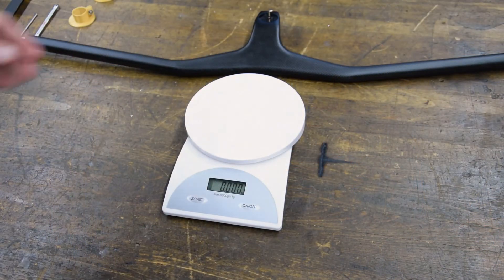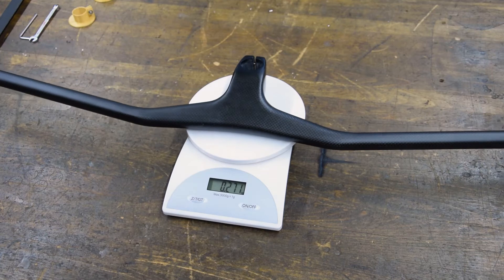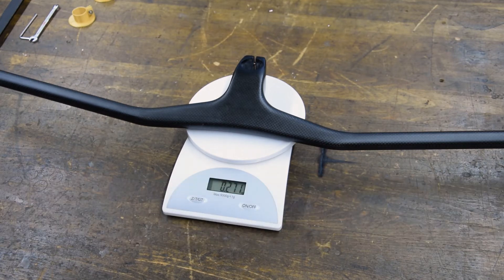So let's measure first the total weight of the bar stem combo. The handlebar weighs exactly 271 grams and we're still going to cut the bar to my desired width.